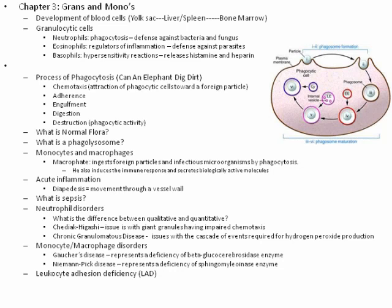Know the process of phagocytosis and the order: chemotaxis, adherence, engulfment, digestion, destruction — you have to know that. Normal flora is the bacteria you have normally in your body that your body does not destroy as foreign. For example, your intestines are full of bacteria needed for digestion — that's considered normal flora. You want to have that there for digestion to take place appropriately.